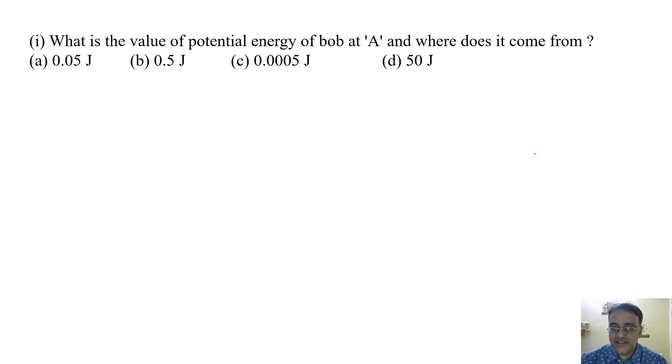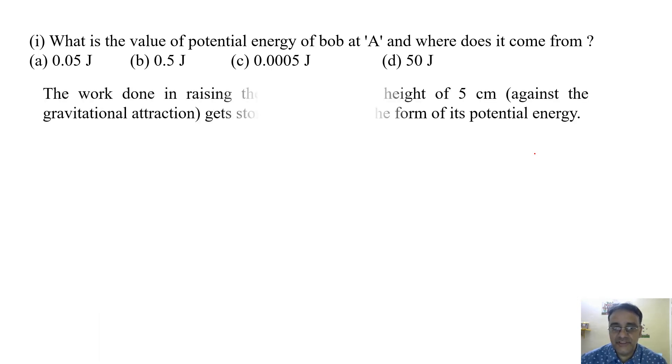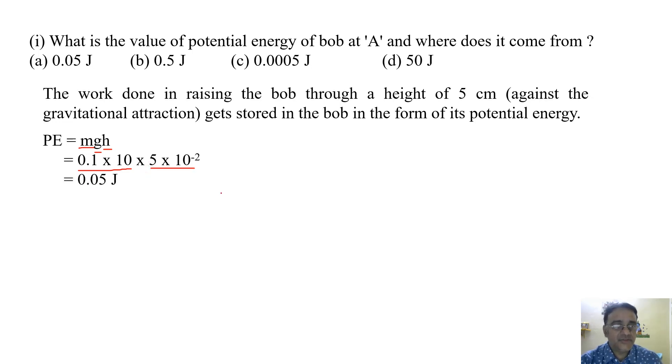So the potential energy is given by the formula MGH. Mass is already given 100 gram but we have to write in kg. So we will write 0.1 and G is given 10 and H is given 5 centimeter. Again 5 centimeter, 5 into 10 to the power minus 2. So yeh dono product 1 ho jaega and we will get 0.05 joules. So the correct option is option A.